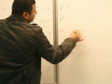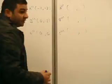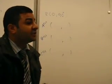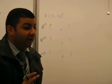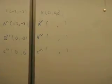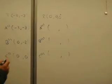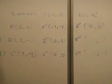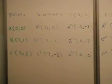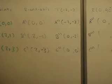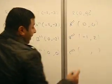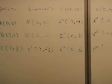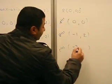Last one: rotation O 90. O means the origin point, 90 degrees is the angle of rotation. For rotation O 90, we change the position of the axes and change the sign of the first one. A triple dash equals zero and zero — the same point. B triple dash: negative one and two. C triple dash: negative three and two.